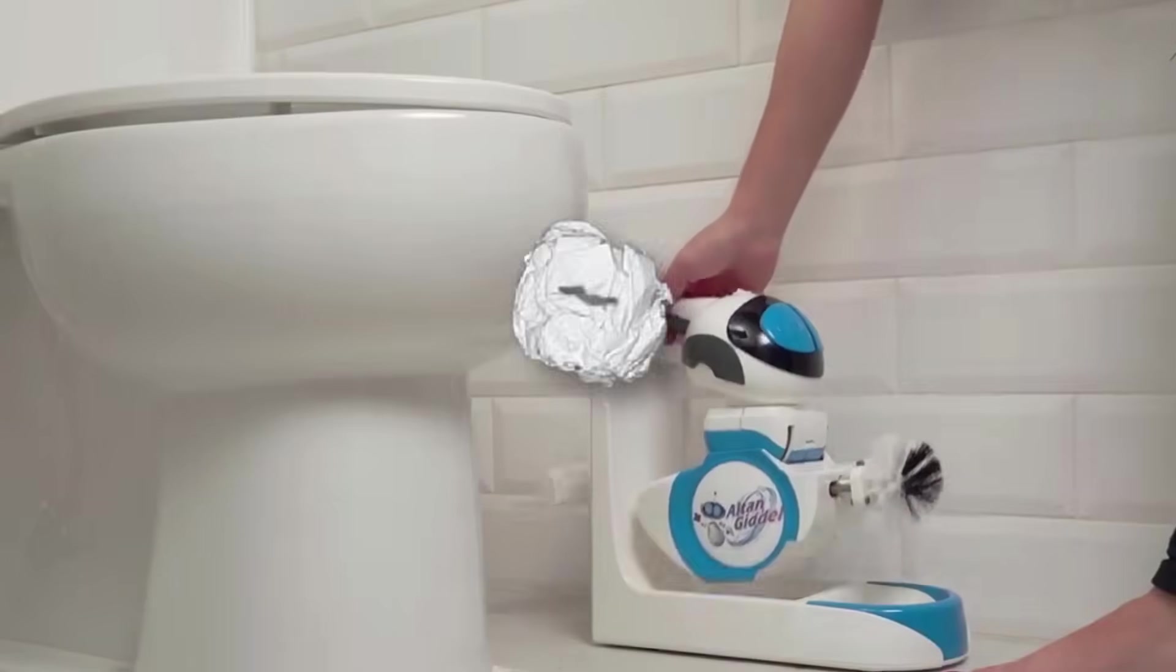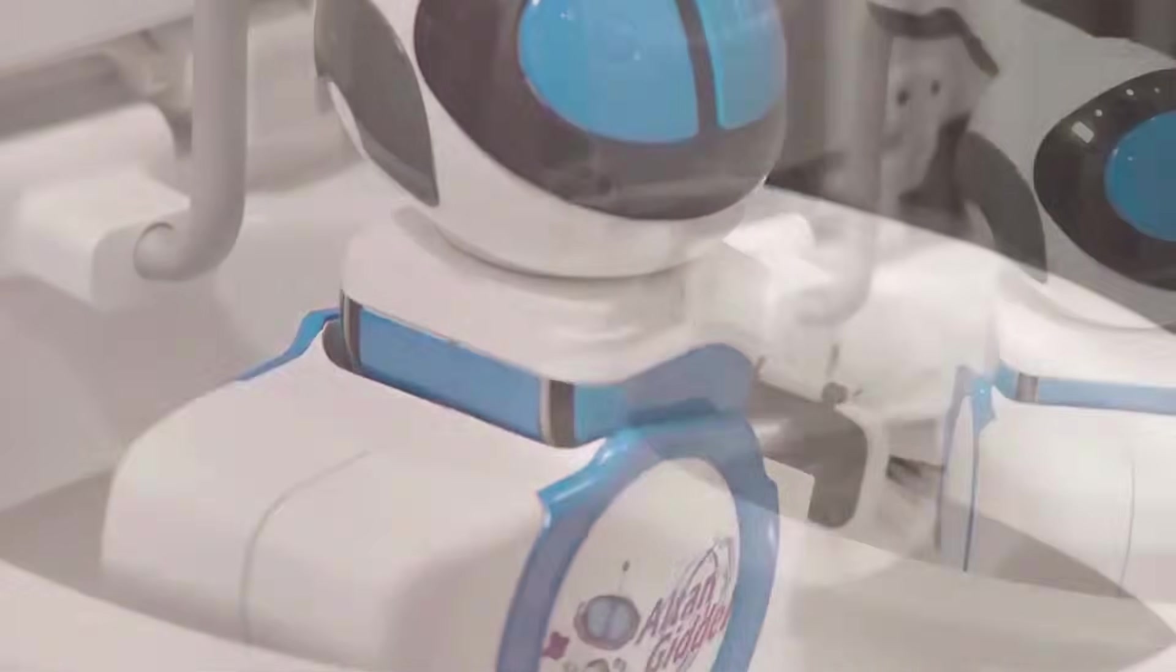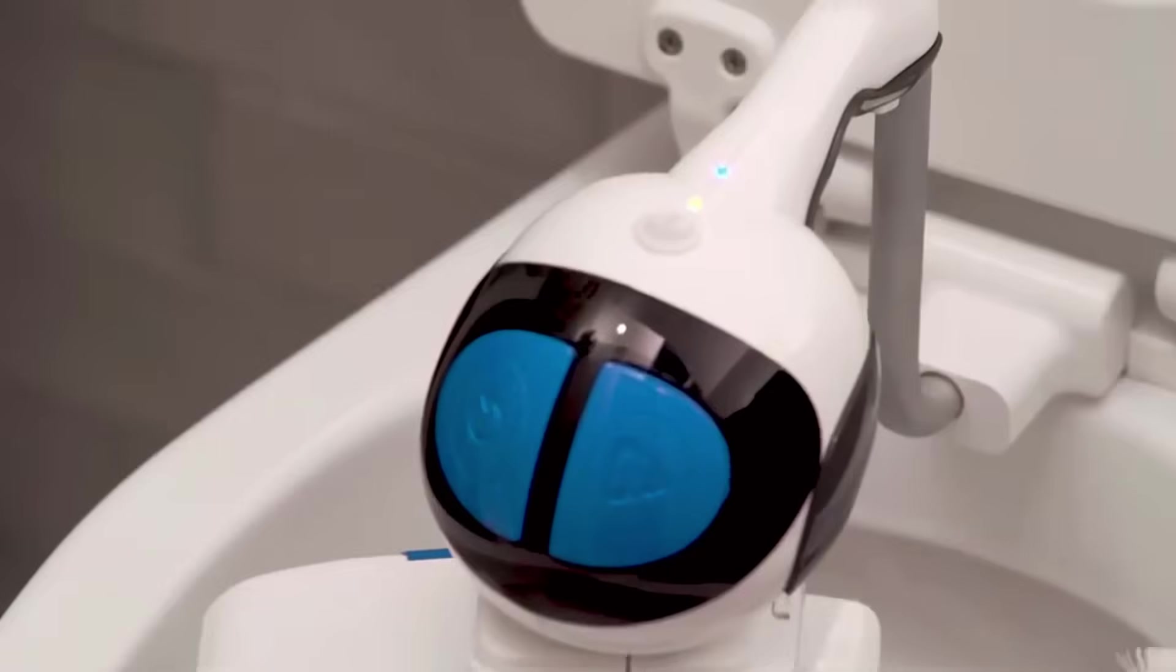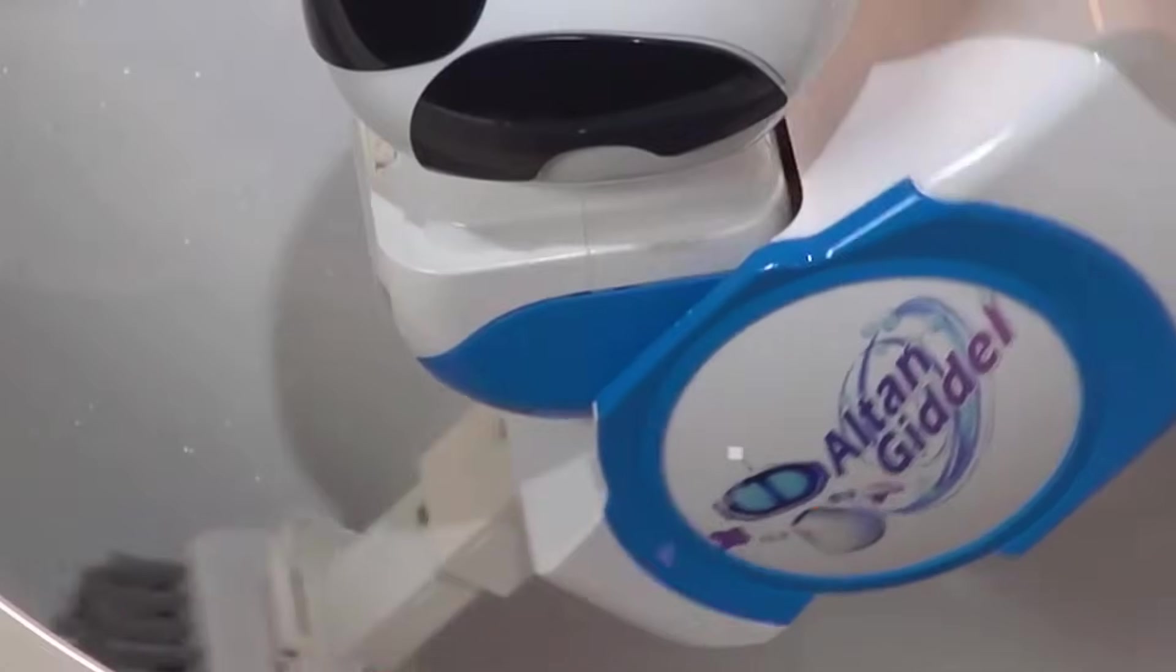Here's how it works. You attach it above your toilet using a bracket, press one of its cute little eye buttons and Giddle gets to work, scrubbing the bowl, the under rim, the inner ring, even those hard to reach corners nobody talks about.